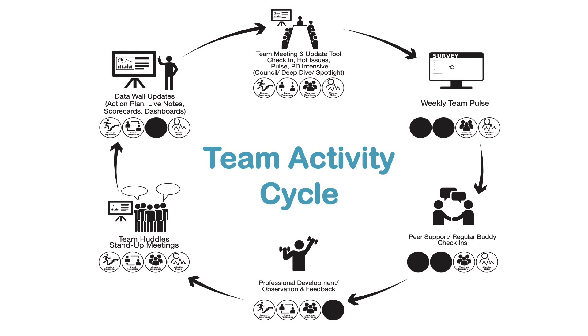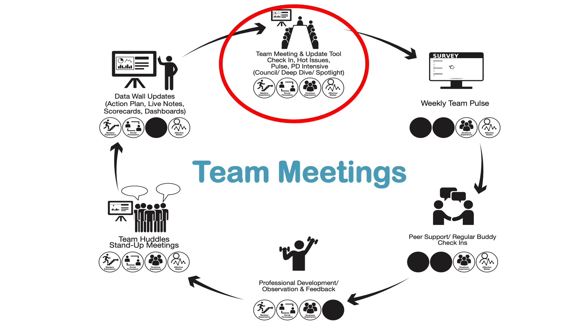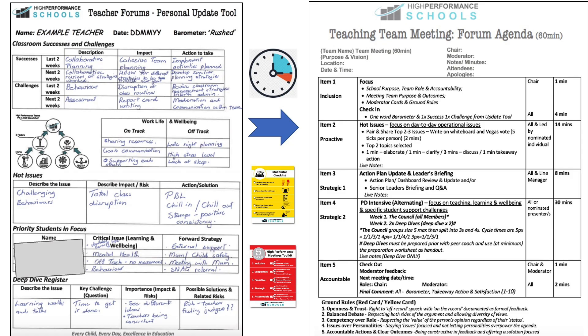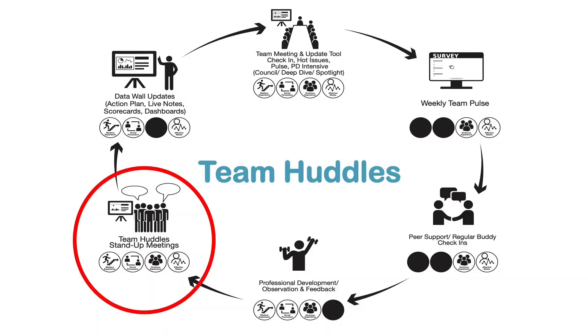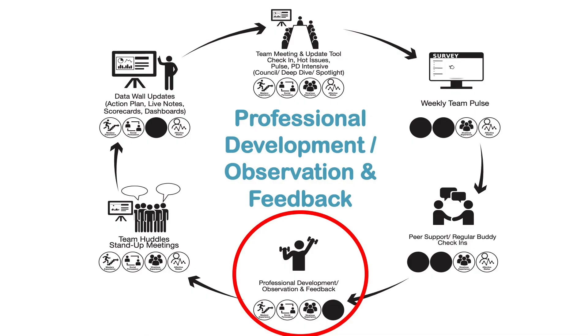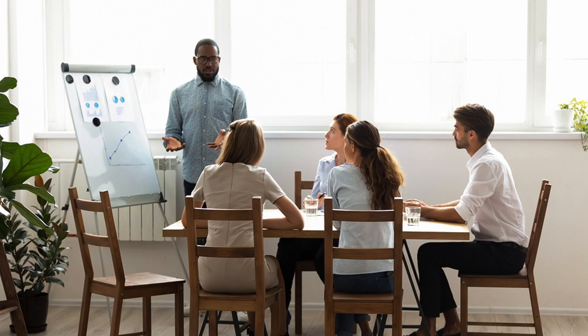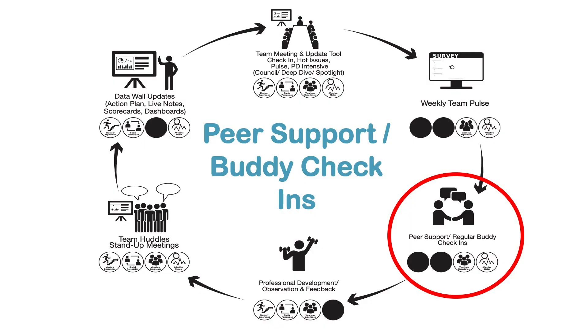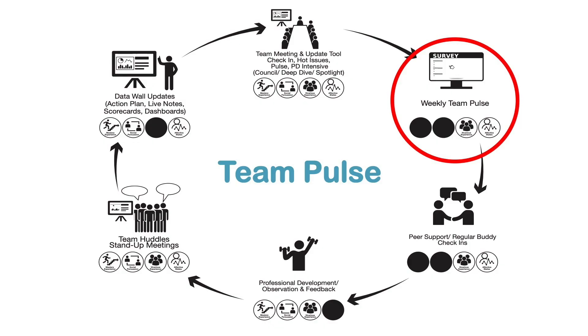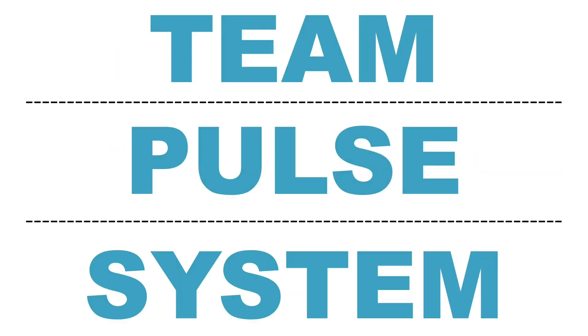When we think about high performance teaching teams, one of the first things we look at is their team activity cycle. You can see on the screen a typical teaching team activity cycle. The key activities are: teaching team meetings with a particular toolkit of update tools and agendas; team huddles — those remote or face-to-face get-togethers around the team's data wall; professional development; buddy check-ins one-on-one; and finally the weekly team pulse and monthly scorecard discussion.